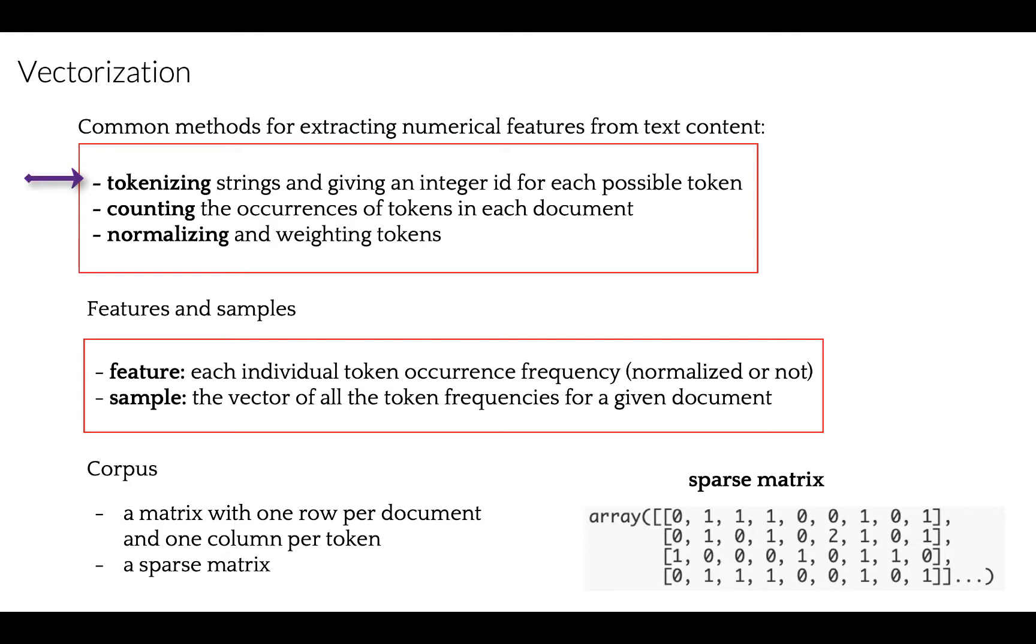Tokenizing strings and giving an integer ID for each possible token, for instance, by using white space or punctuation as token separators. Counting: we count occurrences of each token in each document. Normalizing: we may normalize and weight with diminishing importance tokens that occur in the majority of documents.